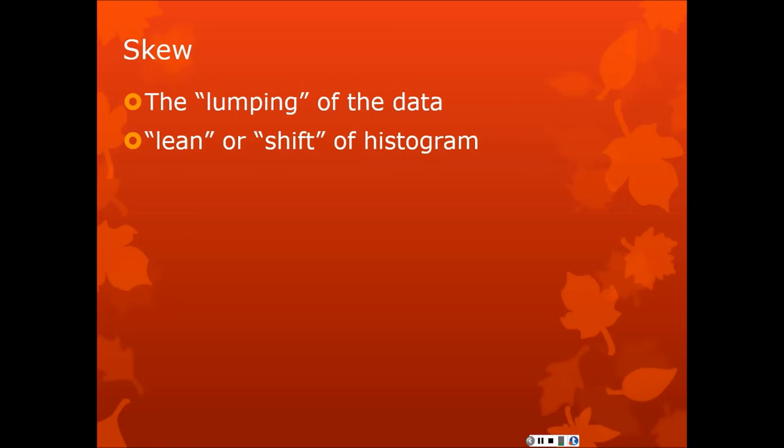So that last graph we saw was symmetrical. It had a lump in the middle, and it wasn't leaning to one side or another. Skew is how much it leans to one side or another. It's the lumpiness, at least left-right lumpiness of the data. It's the lean or the shift of the histogram. It's like the histogram is made out of jello, and you tilted the whole plate it was standing on. That's called skew.